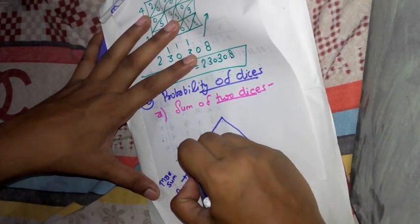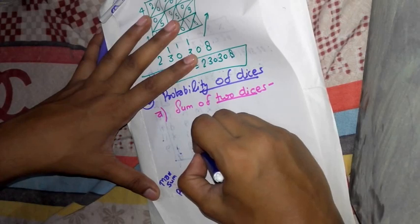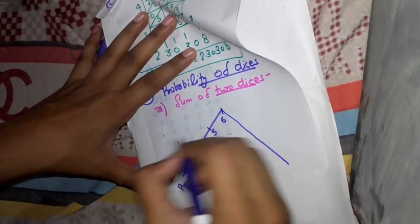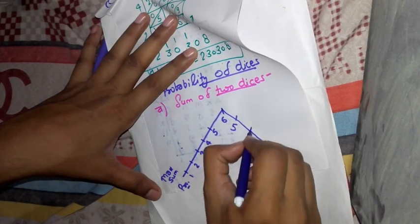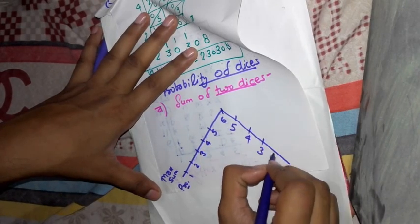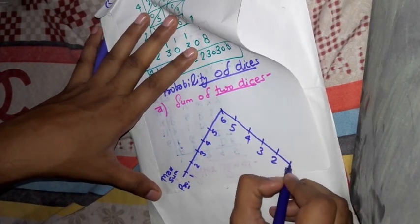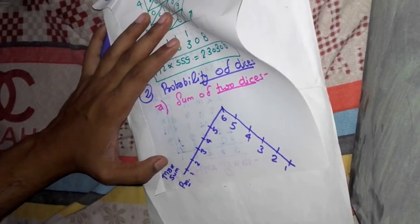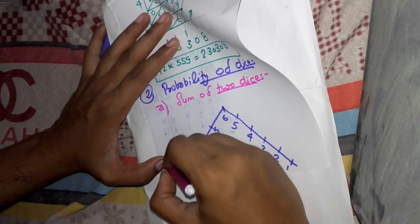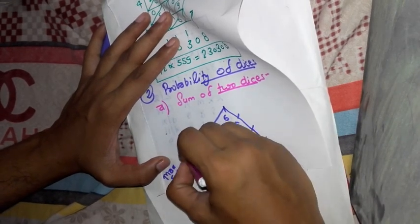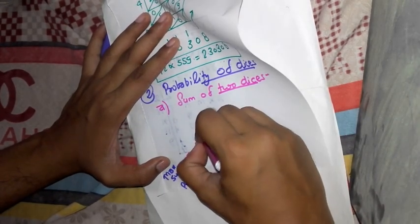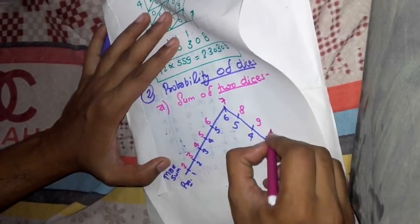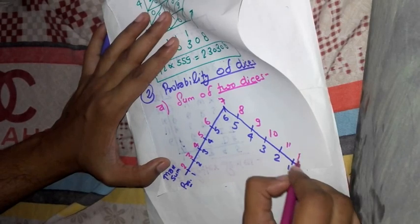In upper side that is maximum sum, and lower side is probability: 1, 2, 3, 4, 5, 6, 5, 4, 3, 2, 1. And in upper side: 2, 3, 4, 5, 6, 7, 8, 9, 10, 11, 12.